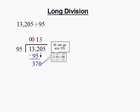The most 95 can go into 370 without going over is 3 times. So a 3 goes on top of the 0. We take the 3 on top of the 0, multiply that by 95, and subtract that from 370. And that will get us 85.